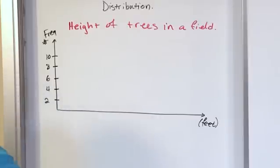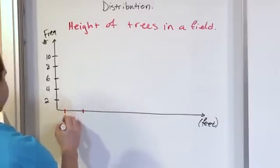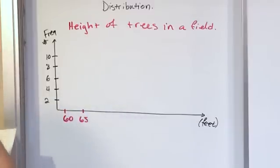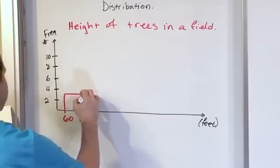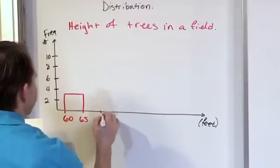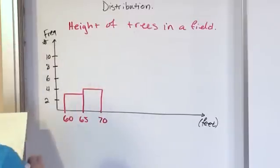Okay, so let's say that between 60 and 65, I got something like 3 trees I measured being in this range. And between 65 and let's say 70, I had 4 trees. So that would be that.